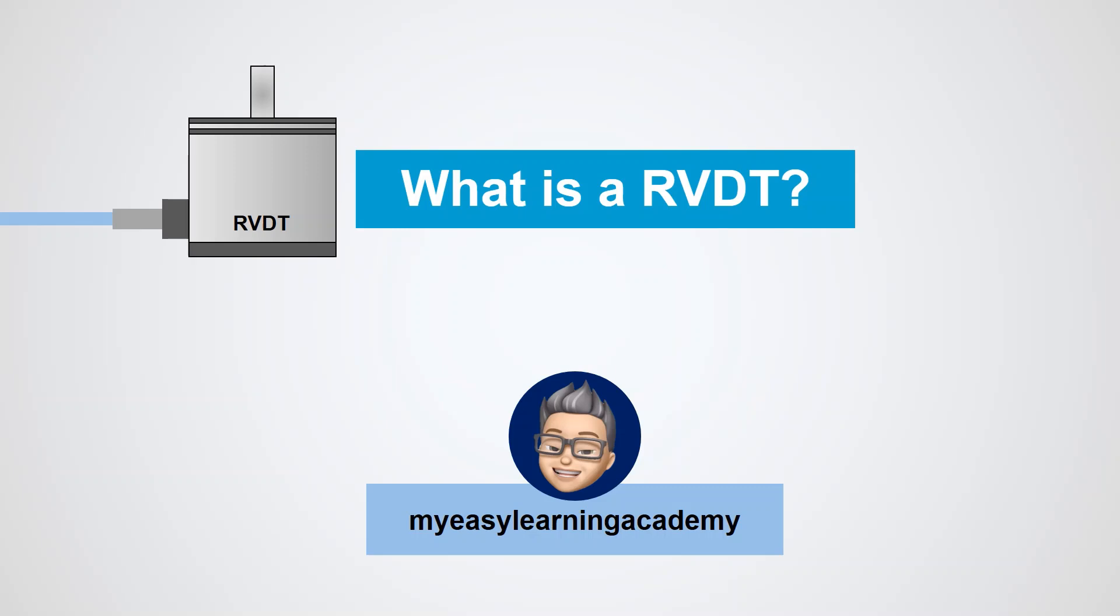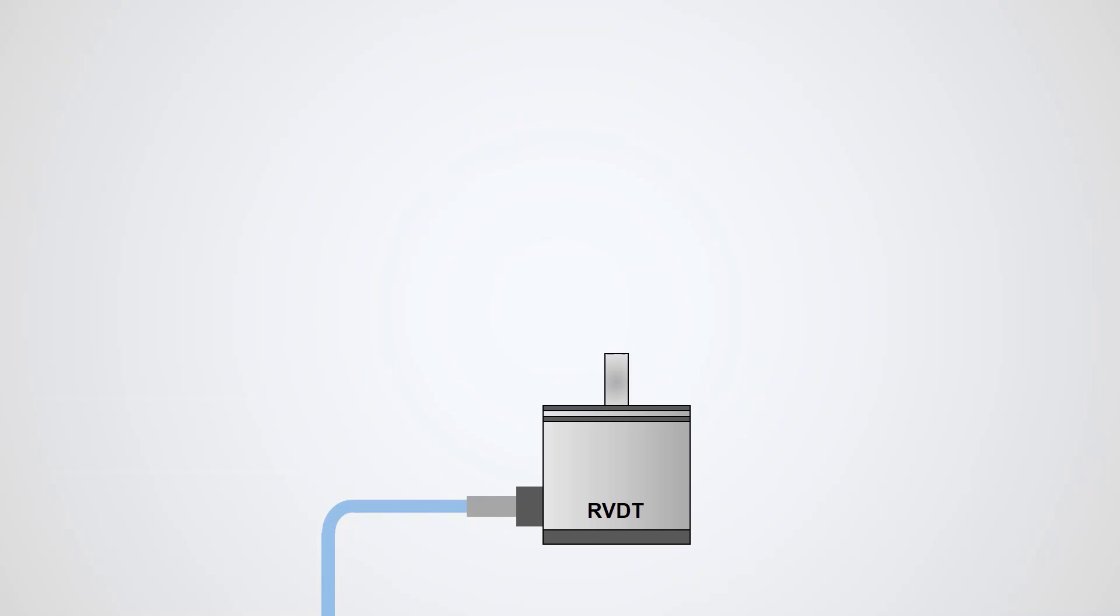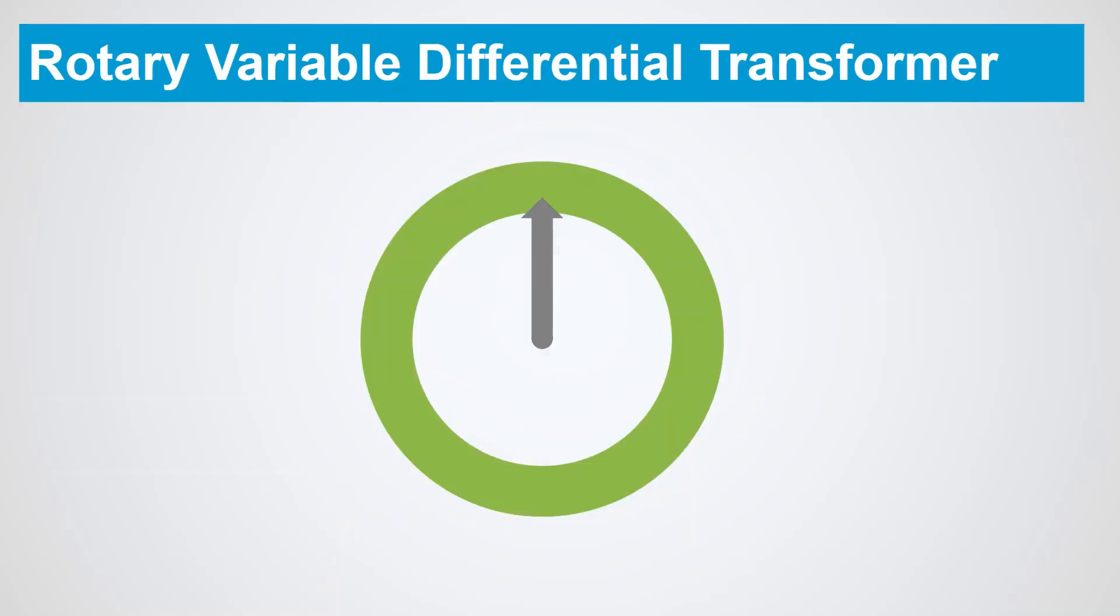RVDT is an acronym for Rotary Variable Differential Transformer and is a common type of electromechanical sensor that can convert the rotary motion of an object around an axis into a corresponding electrical signal.